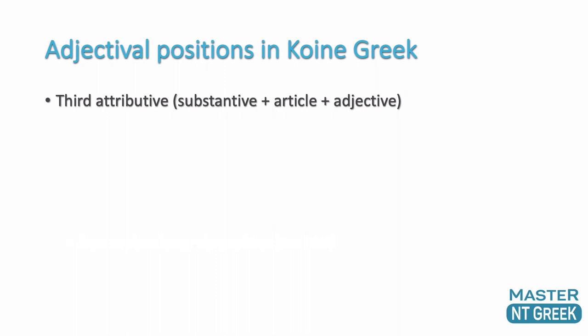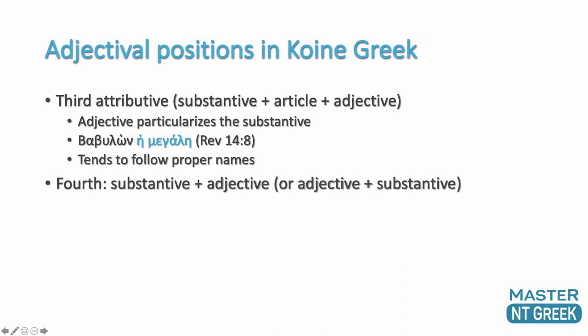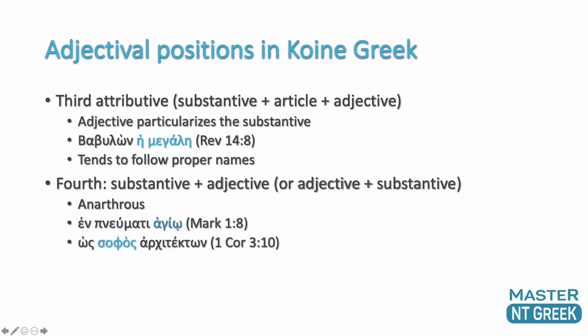There's also the third attributive position, where you get the substantive followed by the article followed by the adjective. In this position the adjective is giving a little more detail, particularizing the substantive. For instance, 'Babylon the Great.' These tend to follow proper nouns. There's also a fourth attributive position, but this is anarthrous — there is no article, it's just the substantive and the adjective, and it could go in either order. For instance, 'by the Holy Spirit,' or 'as a wise master builder.'